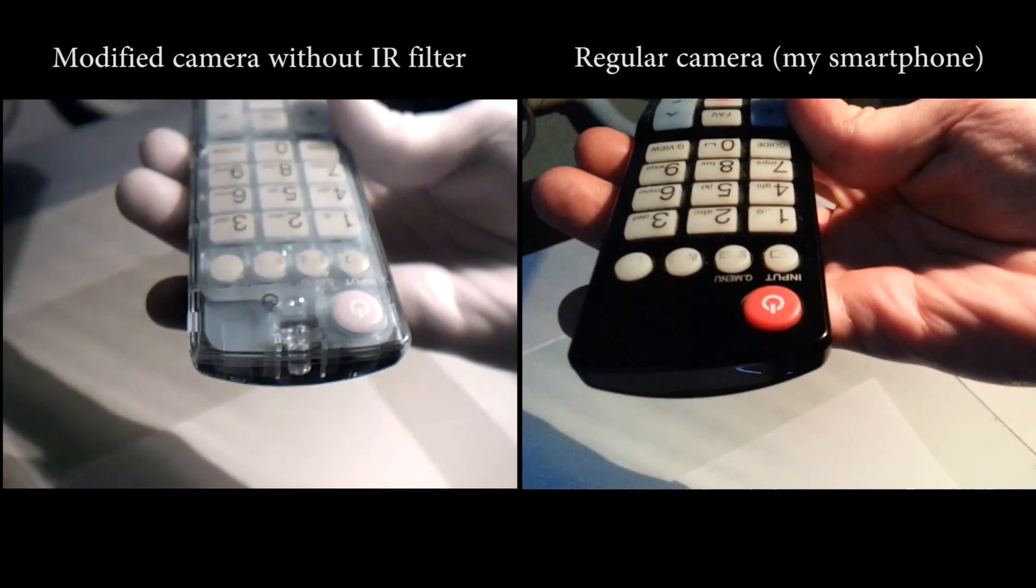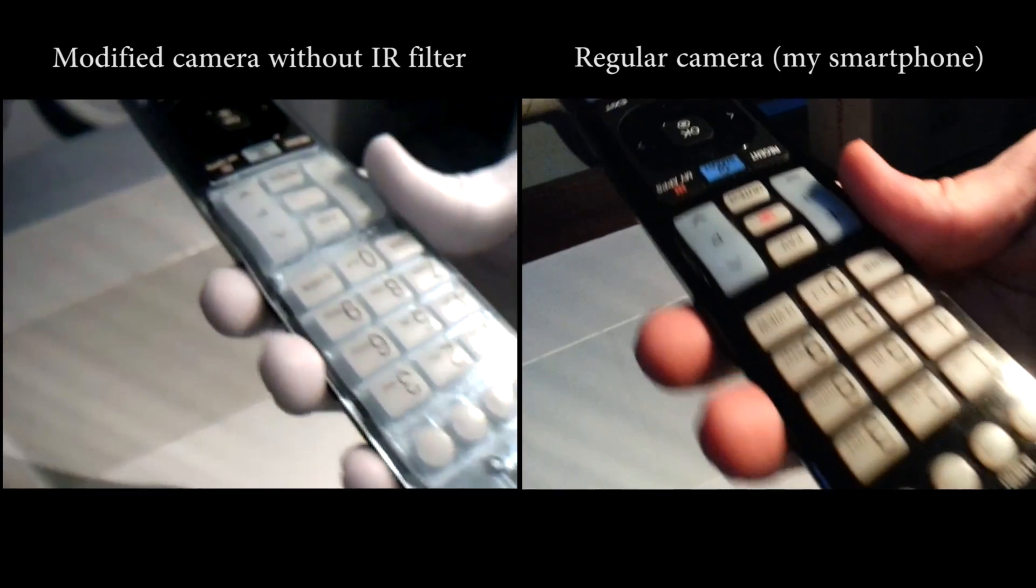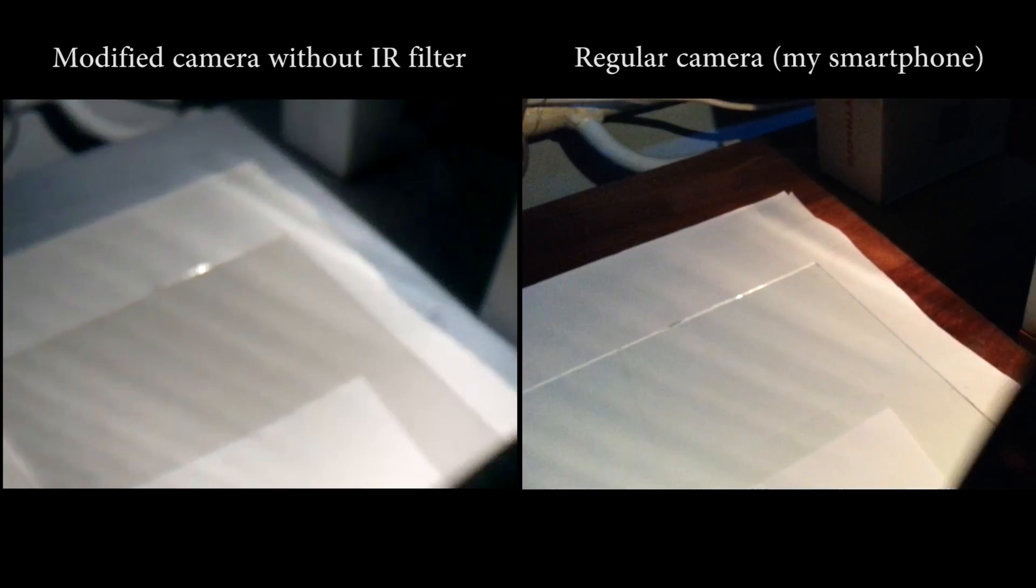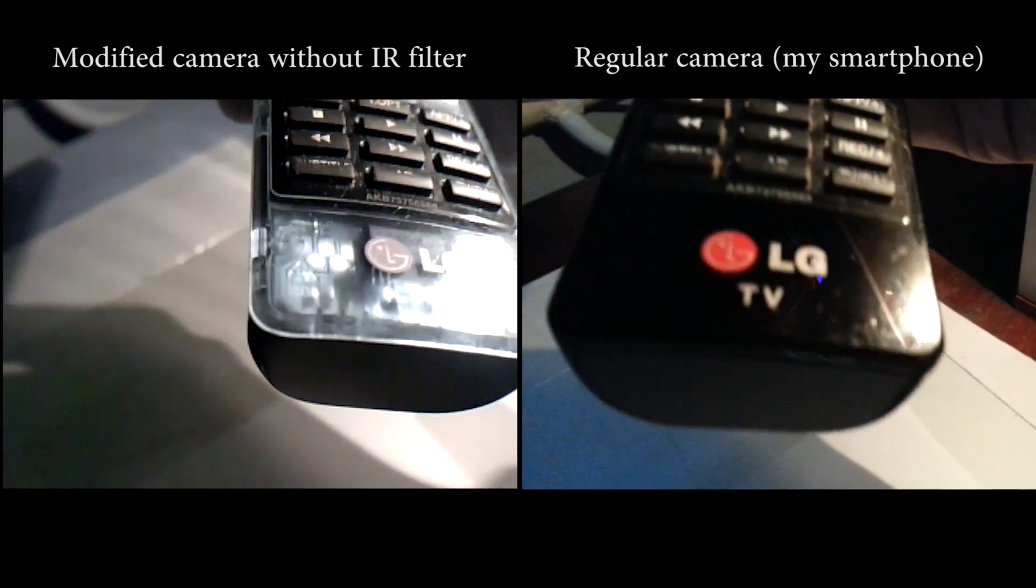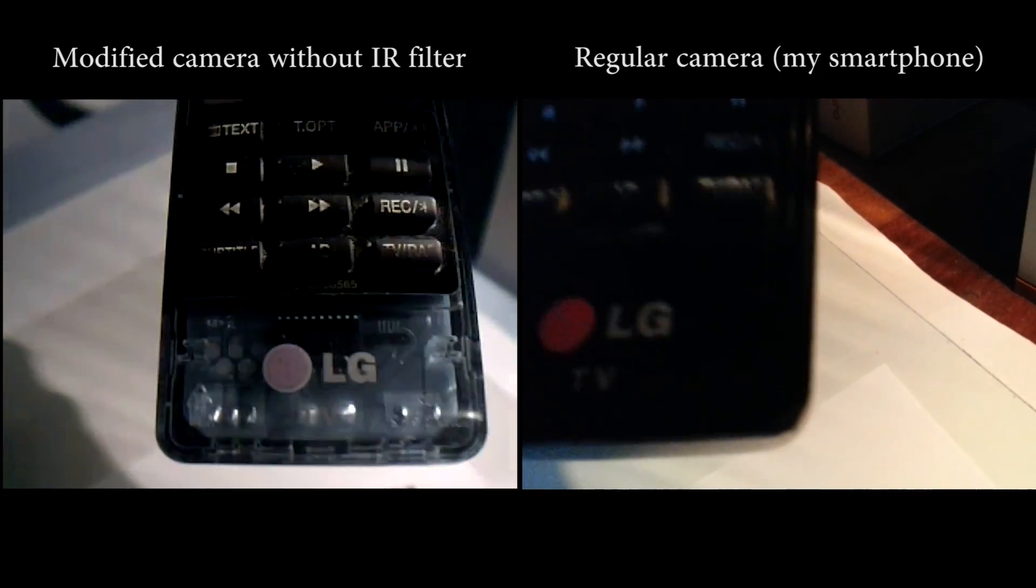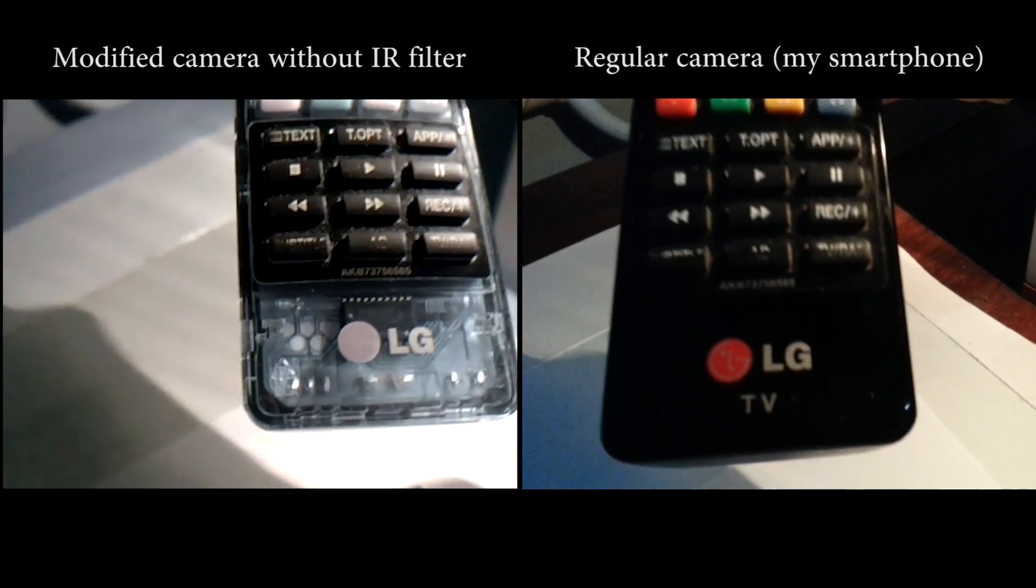Also check out this remote control. I have no idea why manufacturer decided to use a plastic that is transparent for the infrared light. You can clearly see the PCB and integrated circuit inside this remote.